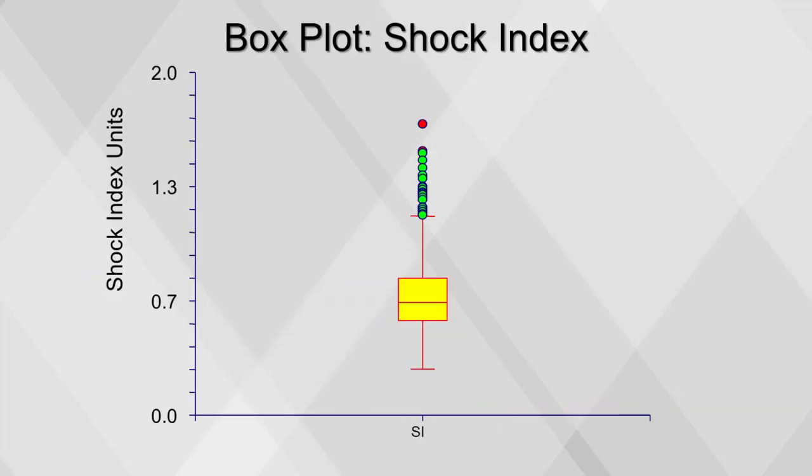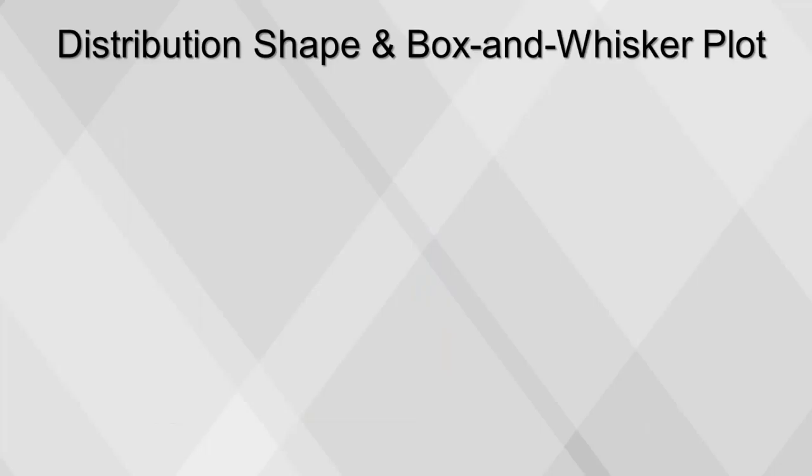Note that the box plot we looked at earlier shows the same positive or right skew that we observe in a histogram for shock index. The median inside the box plot also provides information on the skewness of the distribution.